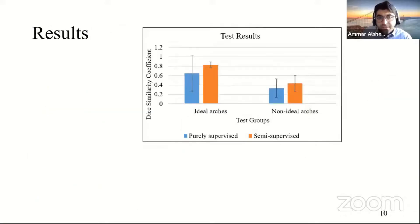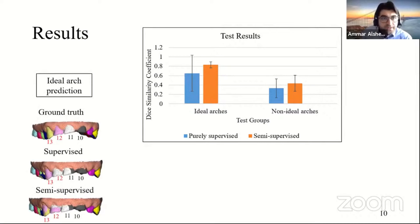And in the results, we can see that semi-supervised training improves the results of segmentation as it yields a higher Dice coefficient, which is the metric that we are using to do the comparison, in both test groups for ideal arches and for non-ideal arches. And here is a visual example of an ideal arch where we can see for teeth number 13 and 12, the purely supervised training did not provide correct labels for these two teeth. But when we add self-supervised training, we can see that the labeling enhances a little bit compared with the purely supervised training.